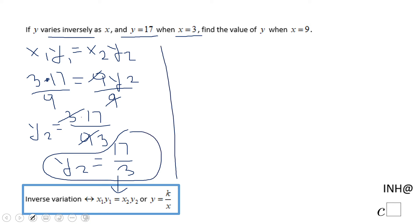Let's take a look at the second method. In the second method we are going to have two steps. First step, we're going to find k. The equation says y equals k over x for inverse variation.